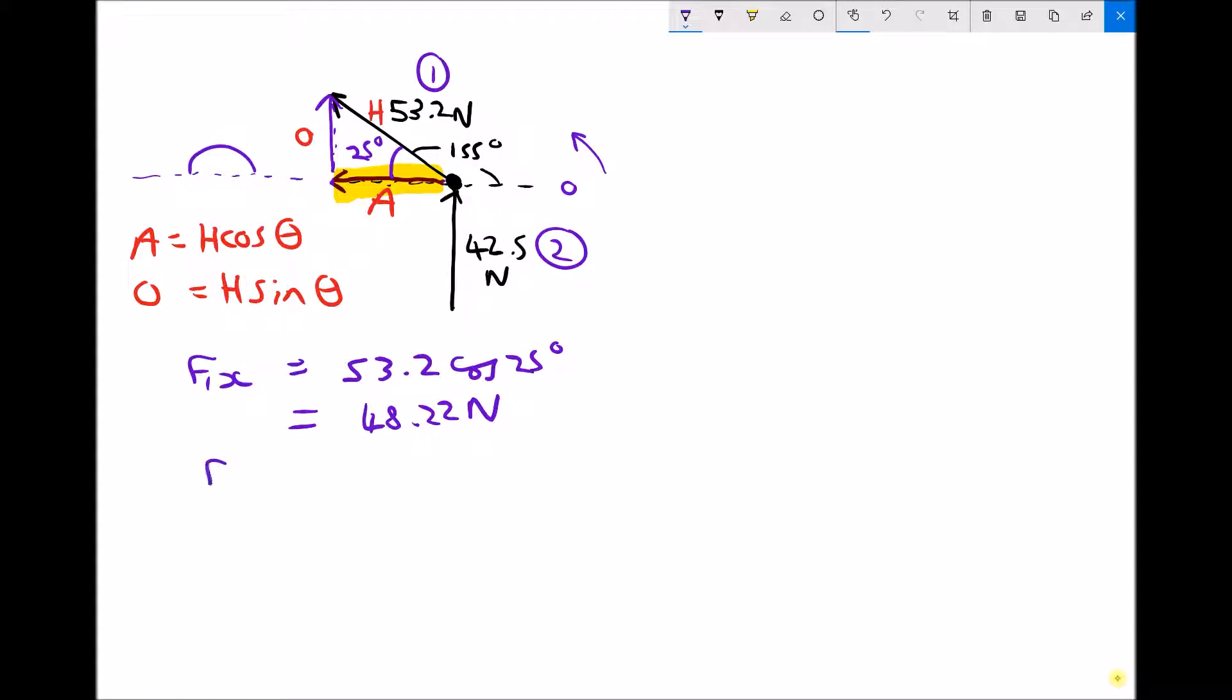And F2X, the x component of the second force, is just going to be 0. It doesn't have an x component. F1Y, the y component of the first force, is going to be the opposite on that triangle. The opposite is hypotenuse sin theta. So we've got 53.2 sin 25, which is 22.48 Newtons. And F2Y is just going to be F2, because it only has a y component, and that's going to be 42.5 Newtons.